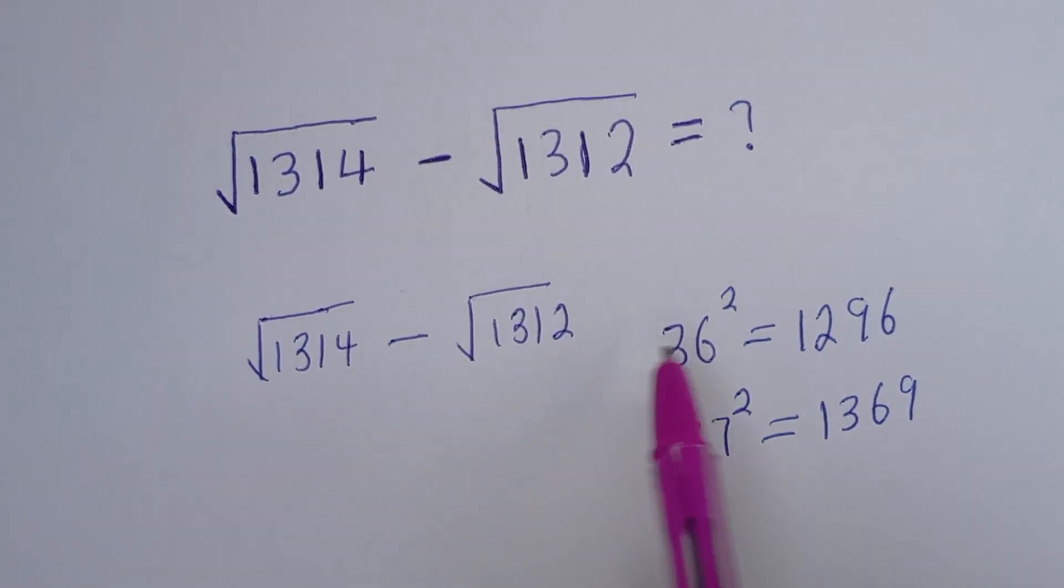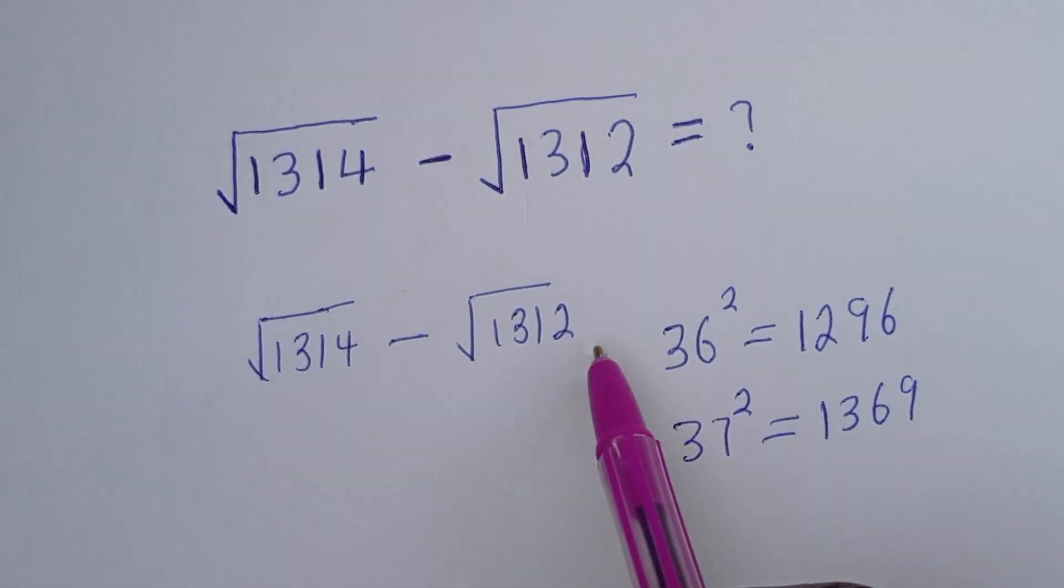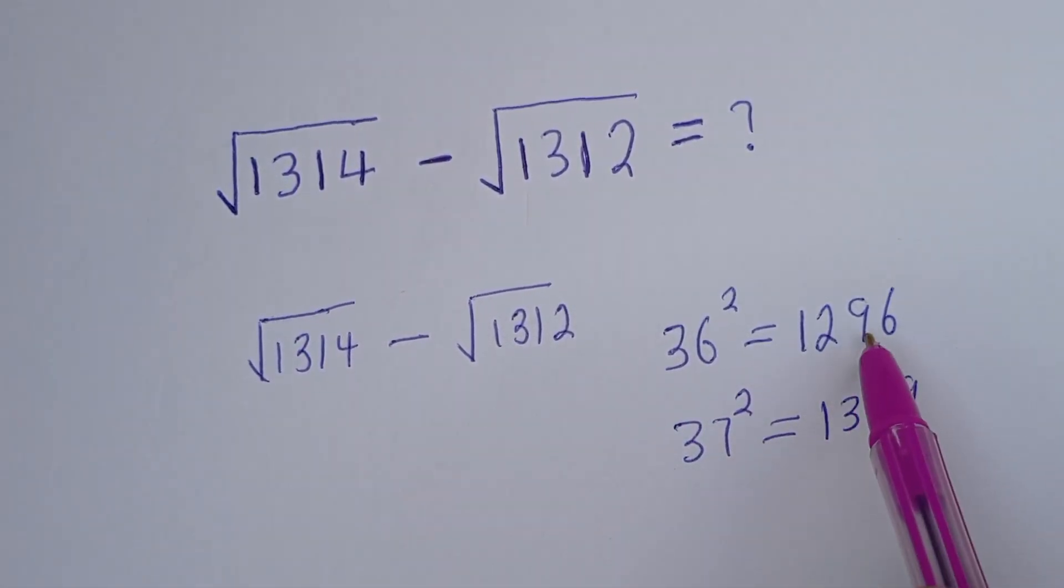Therefore, the nearest square root to 1314 and 1312 is 1296.